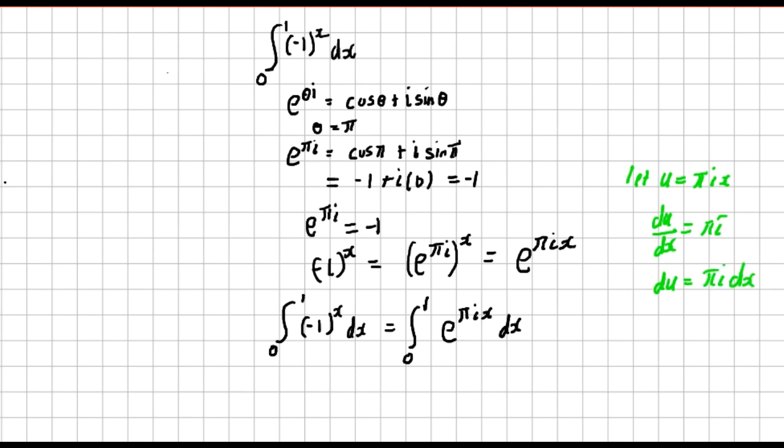So dividing both sides by πi, if you divide both sides by πi, we shall have du over πi is the same as dx.